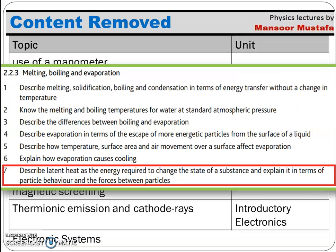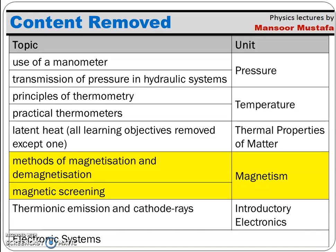The remaining learning objective for latent heat is: 'describe latent heat as the energy required to change the state of a substance and explain it in terms of particle behavior and forces between particles.' So students only need to define latent heat; all other related learning objectives are removed.